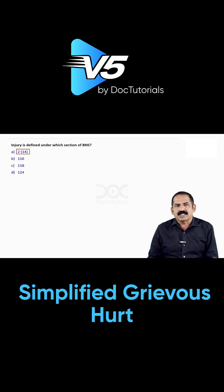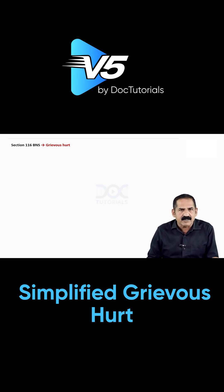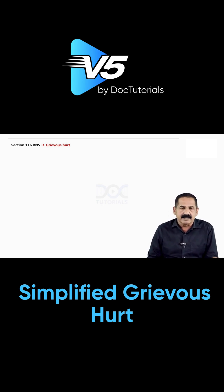Section 116 of Bharatiya Naya Samhita (BNS 2[14]) defines what injuries come under grievous hurt. Here there are eight clauses.